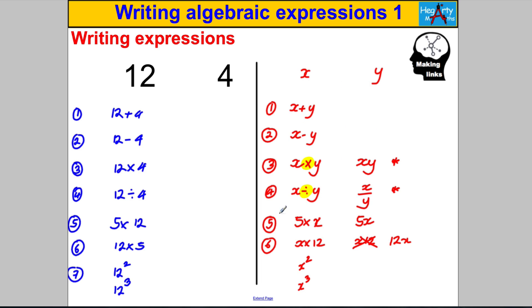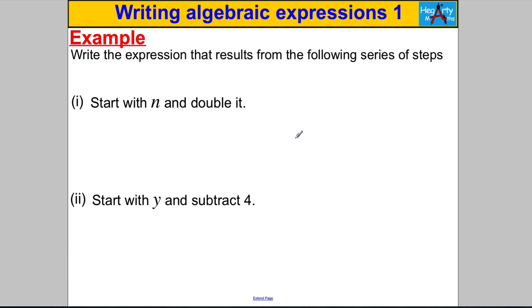An algebraic expression is something with letters and operations — add, subtract, multiply, divide — but no equals sign, because we haven't worked out an answer. Let's try some examples: write the expression that results from each series of steps. We'll use flowcharts to help understand. First example: you start with a number n and you double it. You get 2n — that's how a mathematician writes it.